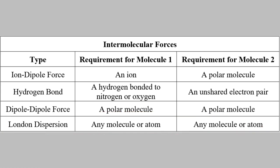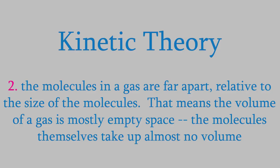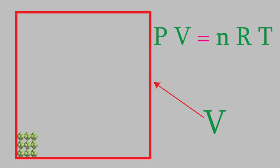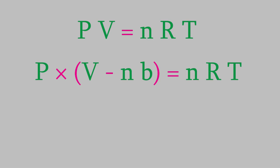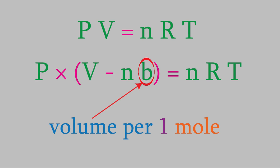Now that we know about intermolecular forces, we can get a more detailed understanding of the flaws in the kinetic theory of gases that we talked about in the last video. First, because the molecules in a gas are so far apart, the kinetic theory makes the approximation that the molecules themselves don't actually take up any space at all. Of course, that's not really true — the molecules really do take up some space in the container. So the volume available for the molecules to move around in is a little less than V, the total volume of the gas. To make the ideal gas law more accurate, we should subtract the tiny volume taken up by the molecules themselves, which equals n times b, where n is the number of moles of gas and b is the volume that a mole of actual molecules takes up.